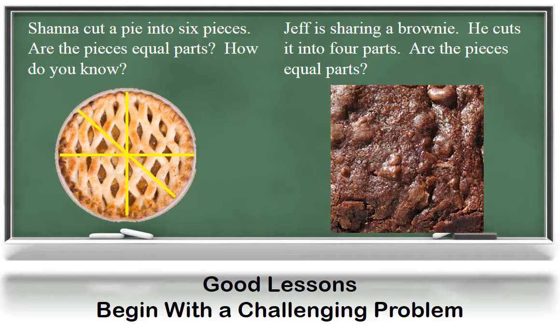In the second scenario, Jeff cut his brownie into four pieces. Are those pieces equal parts? Can we call them fourths? Yes, these are fourths. The pieces are not the same shape, but if you consider that he first cut the brownie in half, and then he cut each half in half, then each piece must be a fourth. He did cut each half in a different way, but everyone getting a piece will still be eating the same amount of brownie.